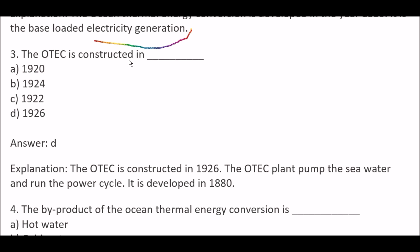Next question: The OTEC is constructed in — Option A, 1920; Option B, 1924; Option C, 1922; Option D, 1926. Right answer is Option D, 1926. Because the OTEC was constructed in 1926. The OTEC plant pumps the seawater and runs the power cycle. It was developed in 1880.